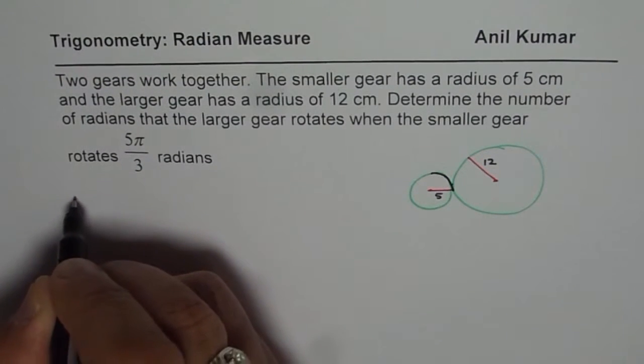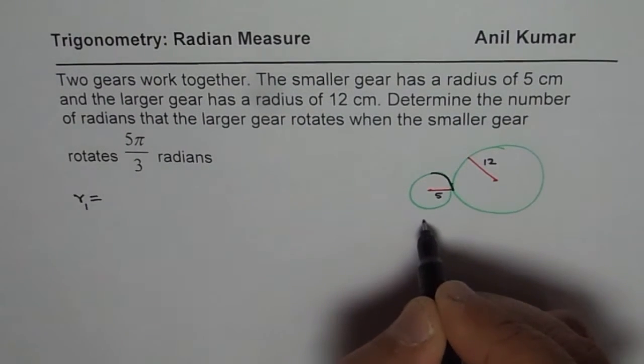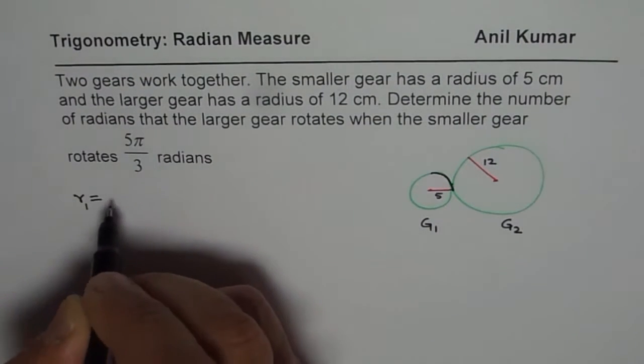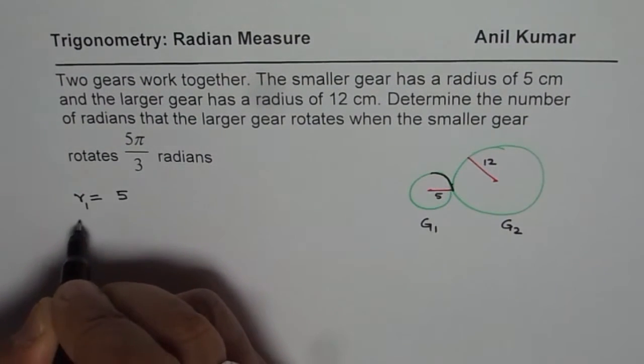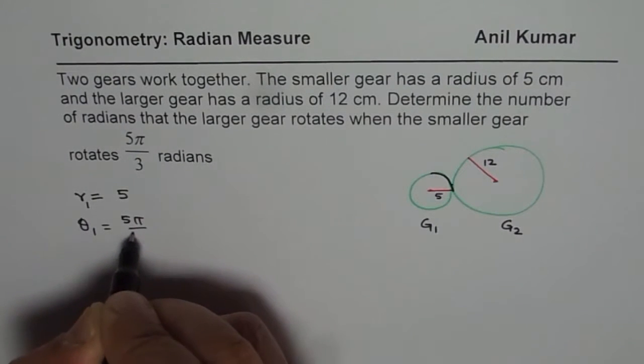So what we know here is that the radius for the smaller gear, let me call this gear 1 and we are calling this gear 2. So radius for gear 1 is 5 and angle rotation for 1 is 5π/3.